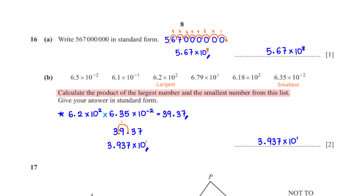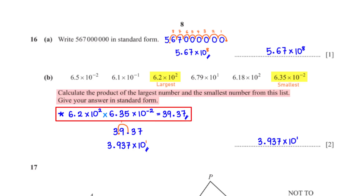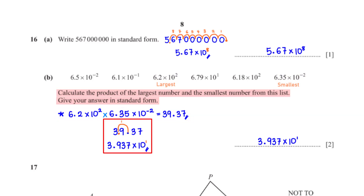Calculate the product of the largest and smallest numbers from this list and give the answer in standard form. The smallest number is 6.35 times 10 to the power negative 2, and the largest is 6.2 times 10 squared. Multiplying gives 39.37. Moving the decimal point one unit to the left gives 3.937, so the answer is 3.937 times 10 to the power 1.